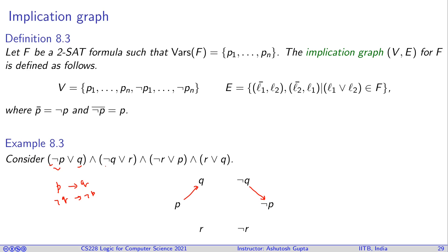Continuing, the clause ¬Q or R gives edges Q→R and ¬R→Q. The clause ¬R or P gives edges R→P and ¬P→¬R.